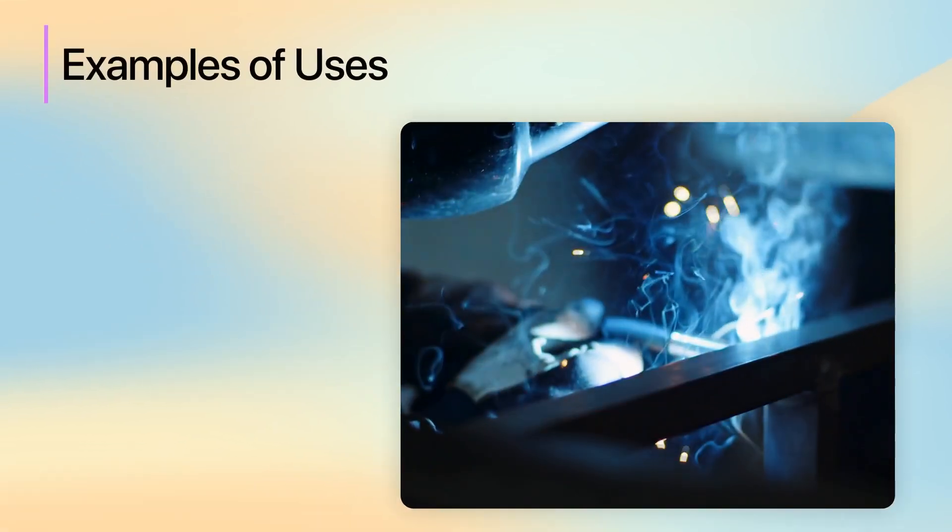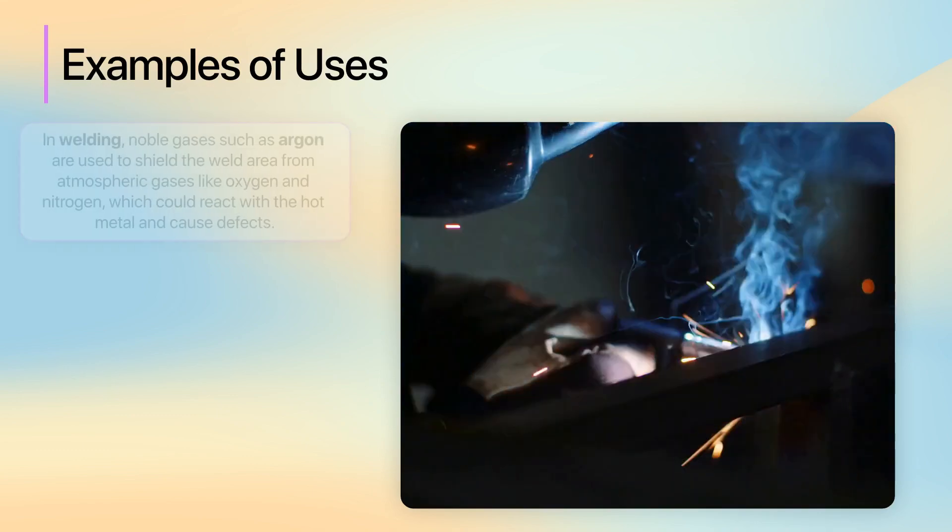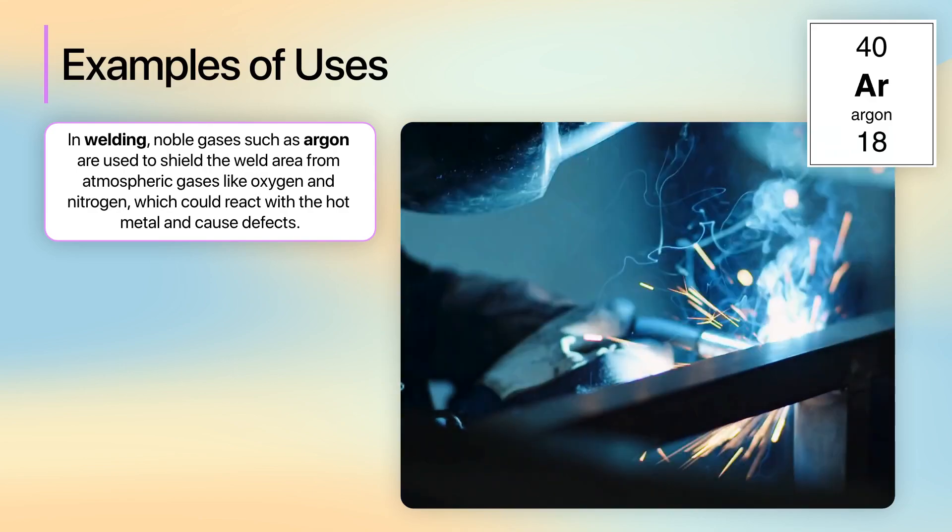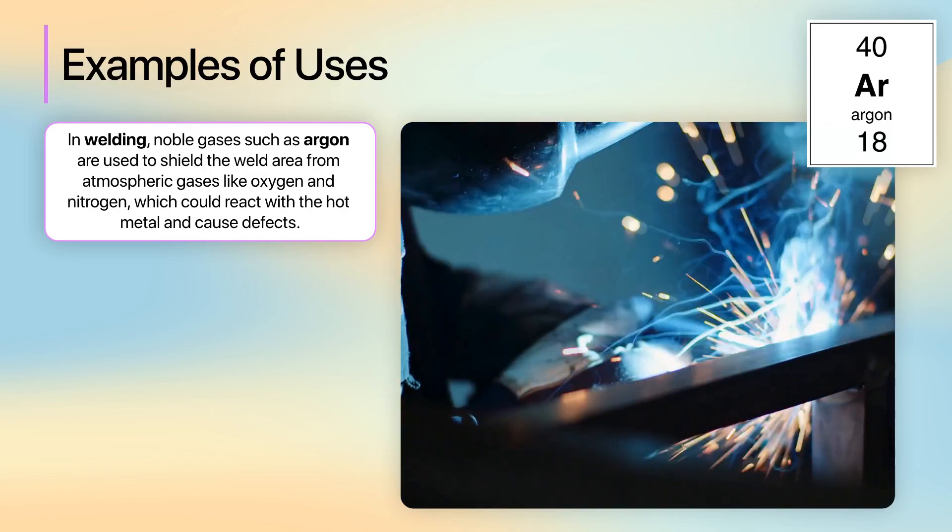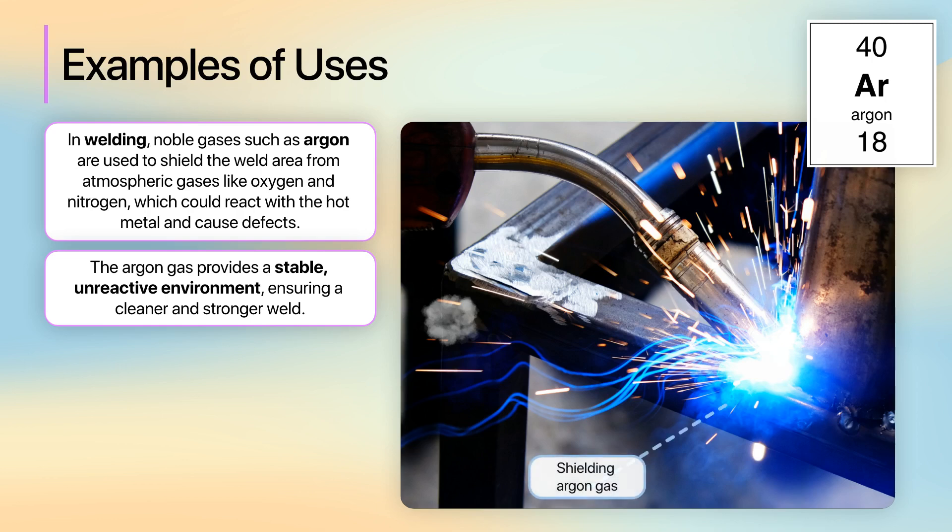Now, let's have a look at these examples of the use of these noble gases in more detail. In welding, noble gases such as argon are used to shield the weld area from atmospheric gases like oxygen and nitrogen, which could react with the hot metal and cause defects. The argon gas provides a stable, unreactive environment, ensuring a cleaner and stronger weld.